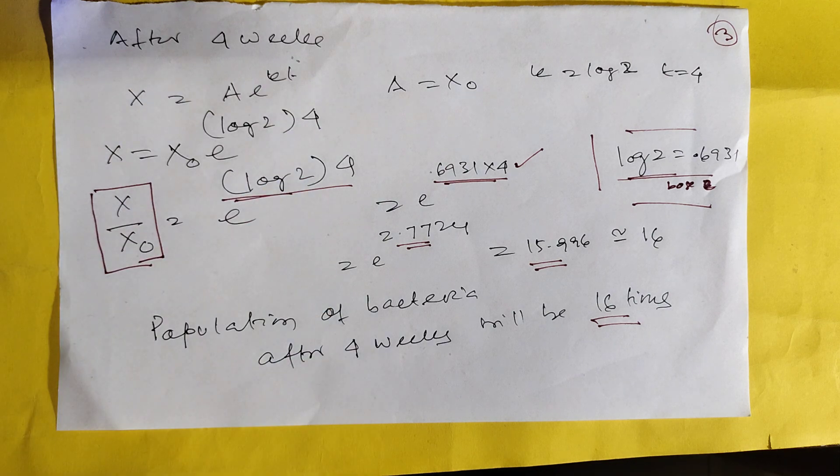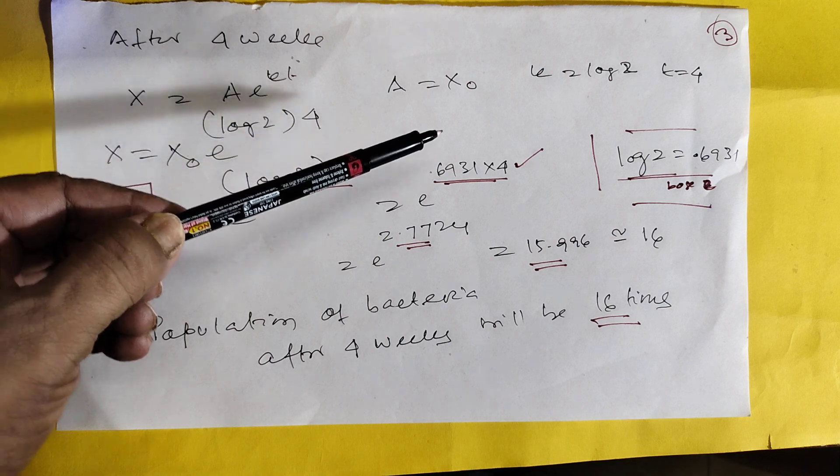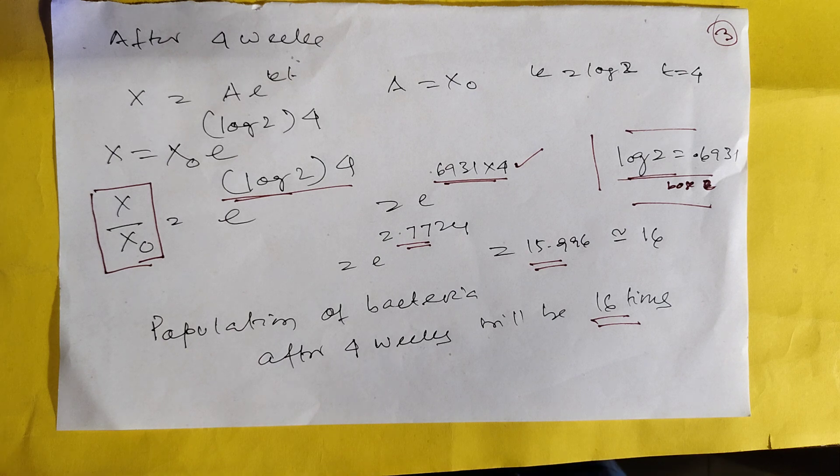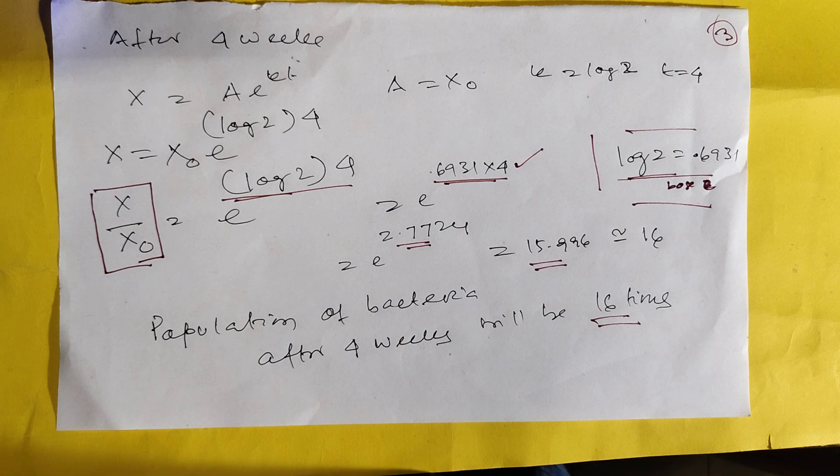So mind it, log 2 is base e. Otherwise, then e to the power 2.75 is around 16. So population of bacteria after 4 weeks will increase by 16 times. With this, to present a complete. If you like it, subscribe, put the bell icon, thank you.